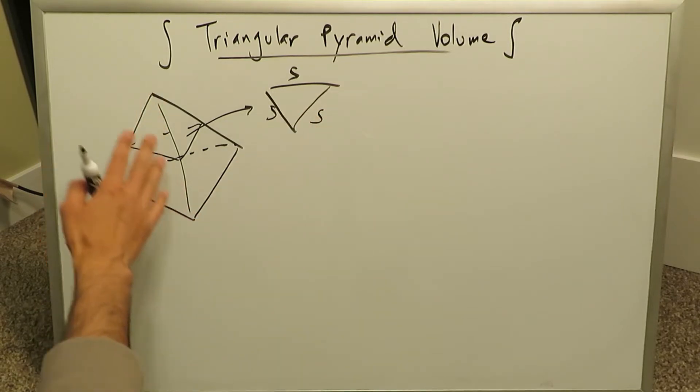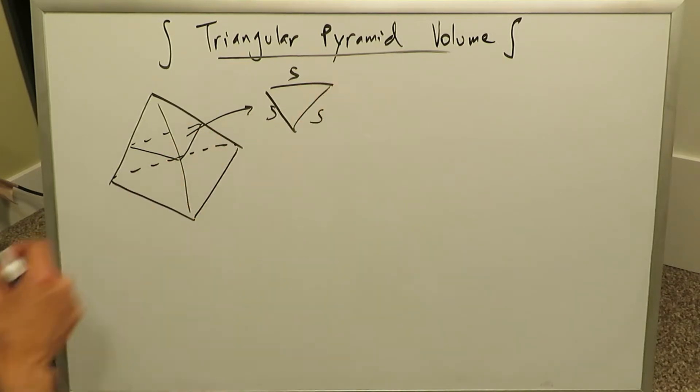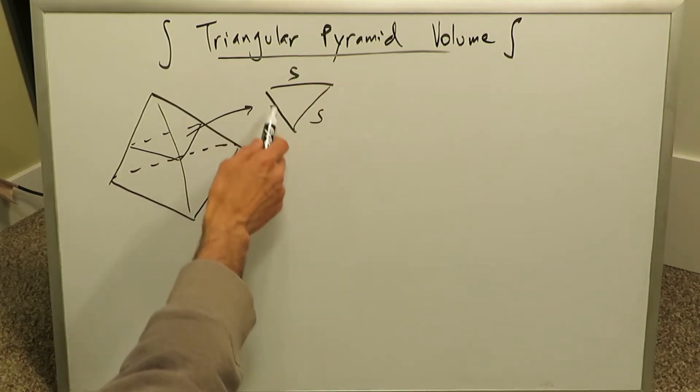You can call it having sides of S. We can call this a regular triangular pyramid, regular meaning that all these three faces, the triangular faces, they're all symmetrical to a certain degree, so we can call it a regular triangular pyramid. Each of these sides here has a side value of S.